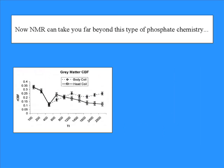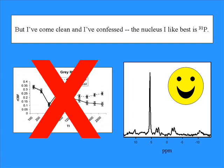Now, NMR can take you far beyond this type of phosphate chemistry. Well, there's 15N, and 39K, and 19F, and 13C. But I've come clean, and I've confessed. The nucleus I like best is 31P.